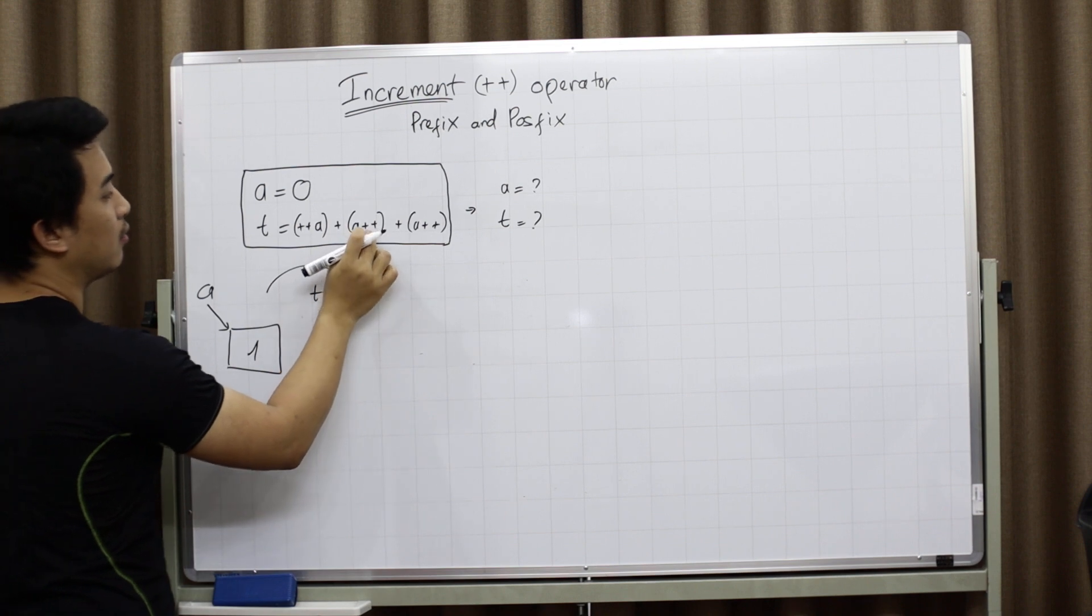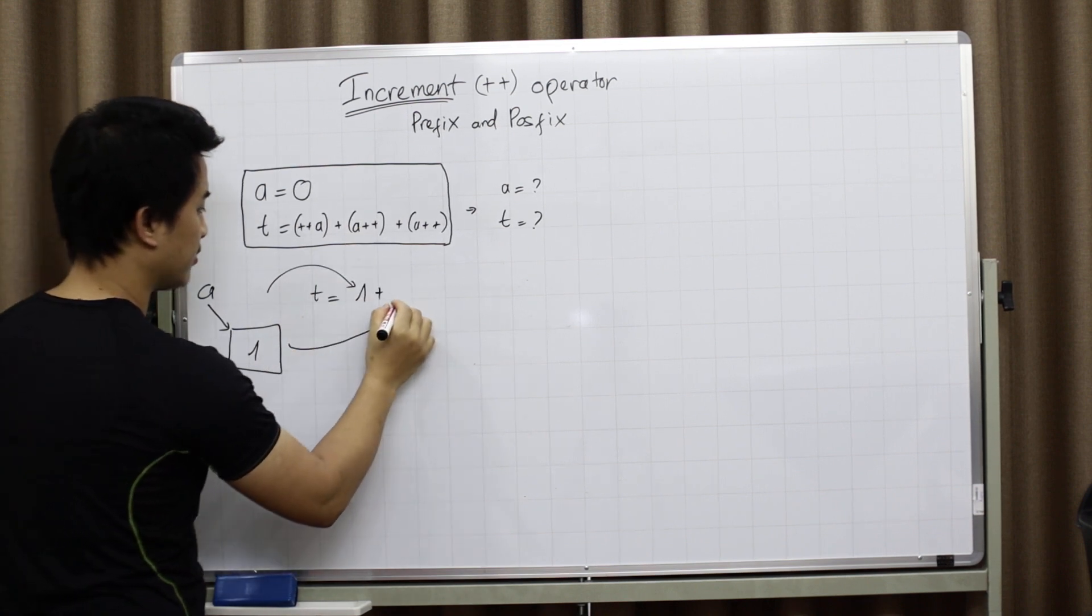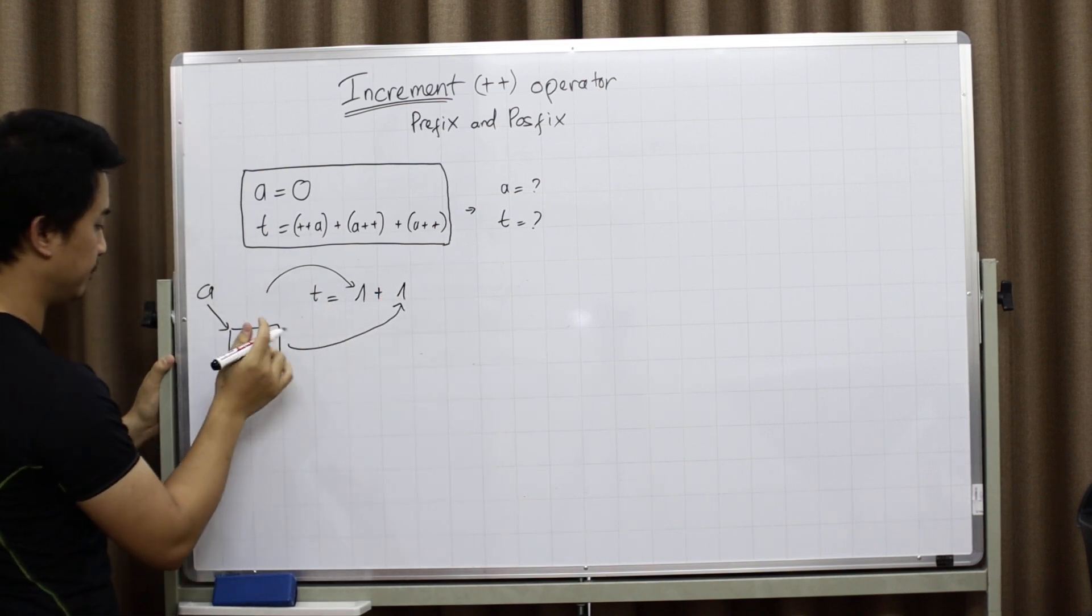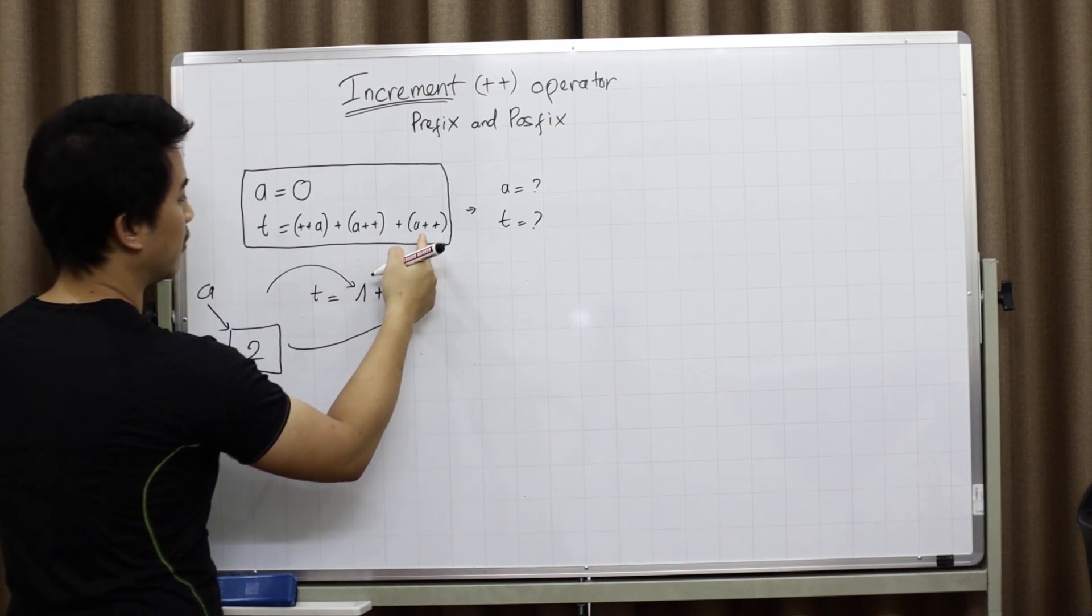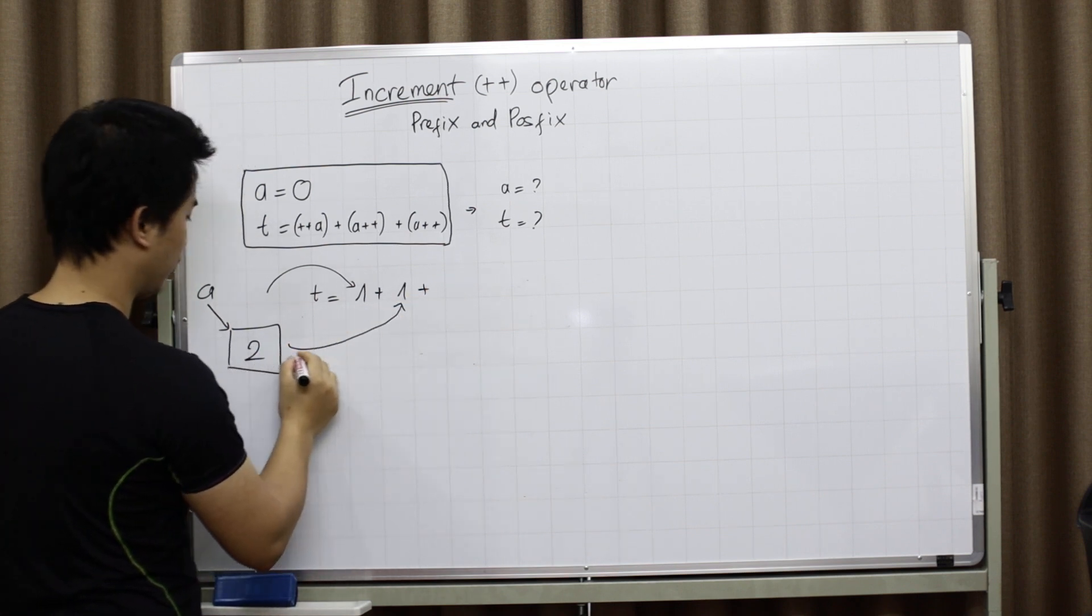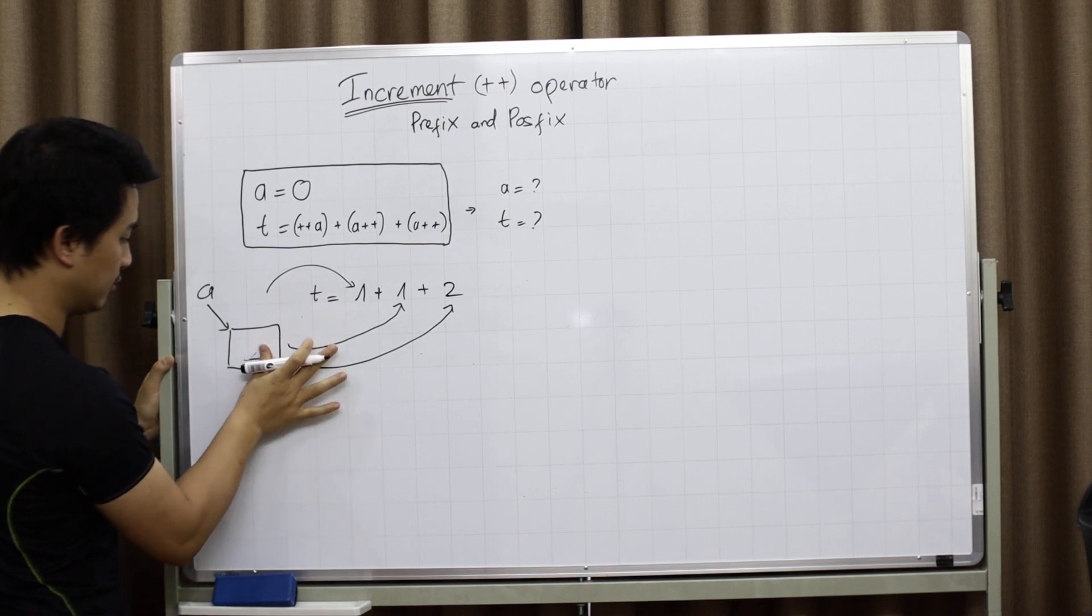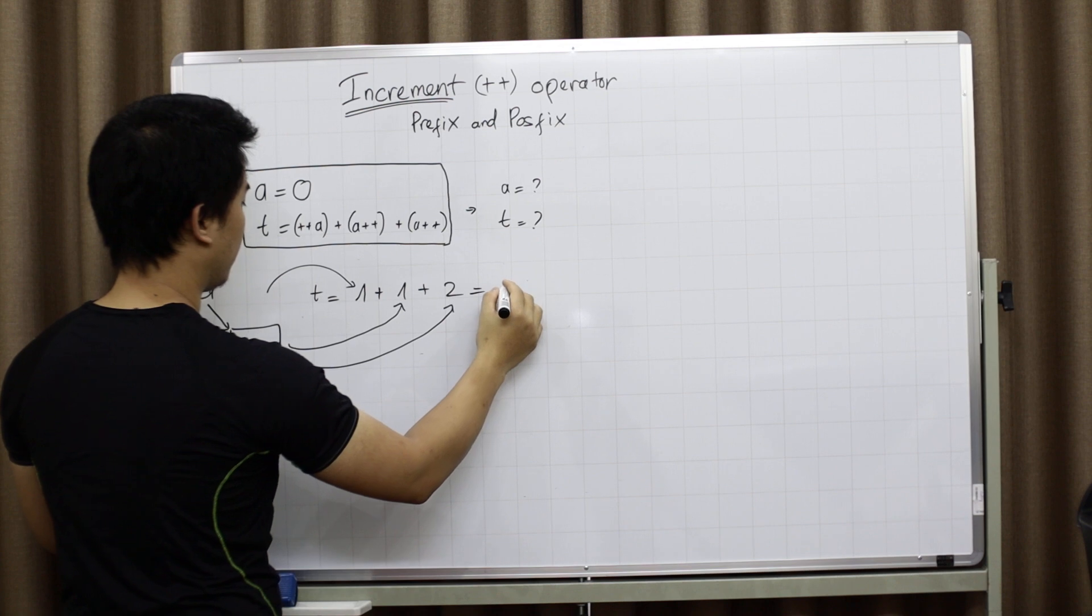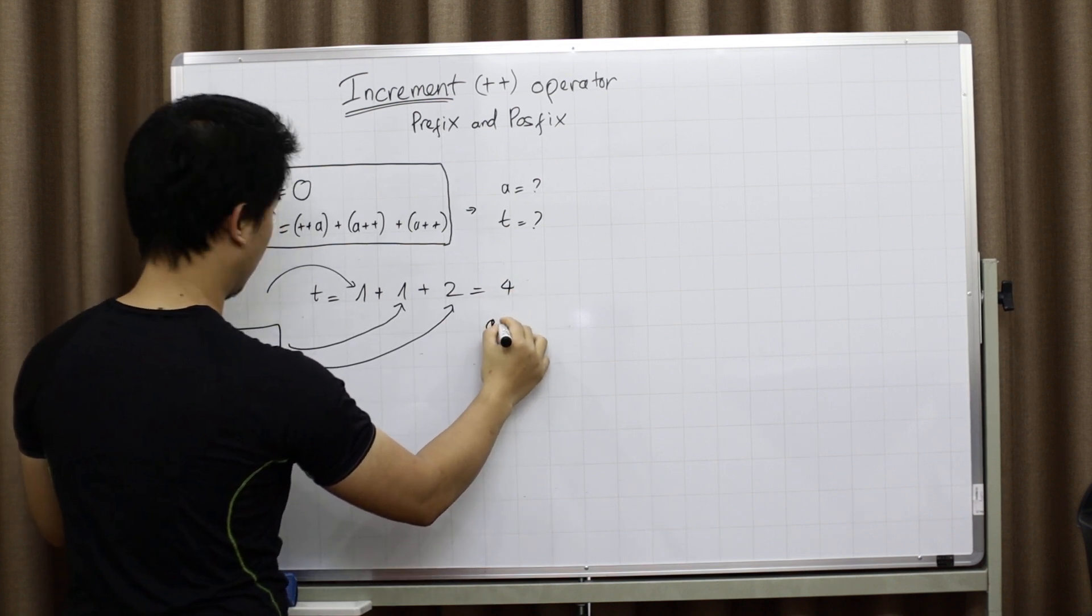When it meets the postfix operator, it returns the value first and increases by 1. So when it gets the postfix operator again, it will return the value and increase A to 3. So actually T here is 4 and A is 3.